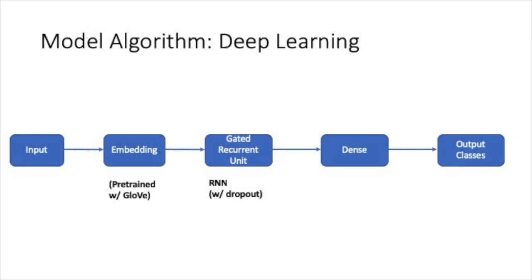I used a deep learning model for the machine learning component. I also tried a linear model, but it did not work as well — which is typical in natural language processing. Since this is sequential data, a recurrent neural network is appropriate. The input is first put into an embedding layer pre-trained with GloVe embeddings, fed into a Gated Recurrent Unit (GRU), which is a type of RNN similar to an LSTM but with fewer parameters and easier to train while maintaining similar performance. It then goes into a dense fully-connected layer, and outputs to the six classes with a softmax activation for multi-label classification.